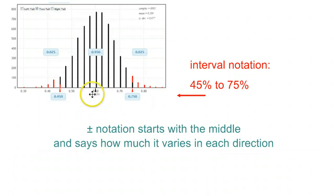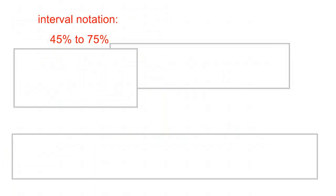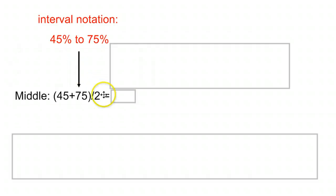Let's go ahead and go through the math here. First thing is to figure out where the middle is. And the middle is always just the average. You add the two ends together and you divide by 2. 45 plus 75, you add those two together, you get 120. You divide 120 by 2 and you're going to get 60% is in the middle.